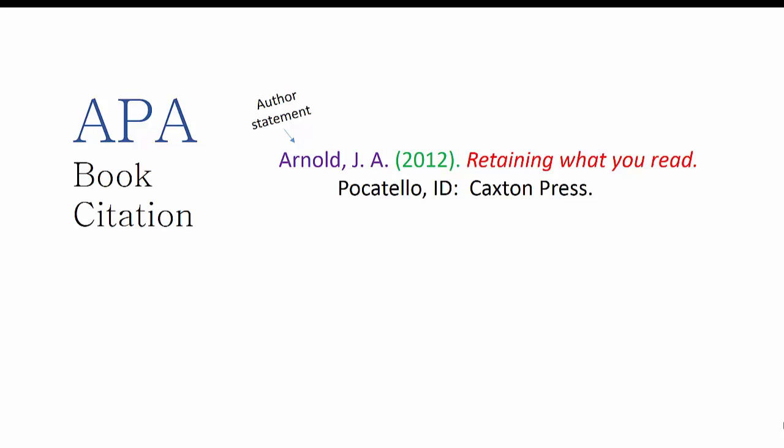In APA, you follow the author's last name with their initials, with a space after each period. Then put the year of publication in parentheses, and close the date statement with a period. Next is the title. Make sure it is in italics, and only the first word and proper nouns are capitalized.